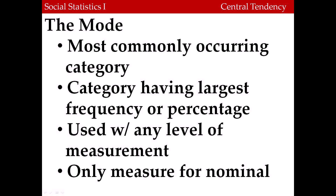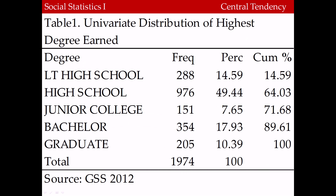We'll begin with the most basic form of measure of central tendency, something called the mode. The mode is the most commonly occurring category — it's the category having the largest frequency or percent. The mode can be used with a variable of any level of measurement, but it's the only one that's appropriate for nominal variables.